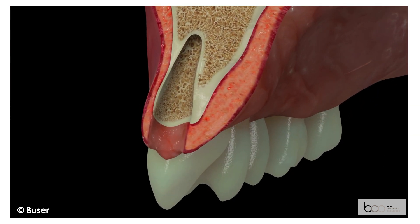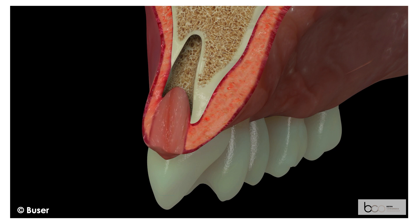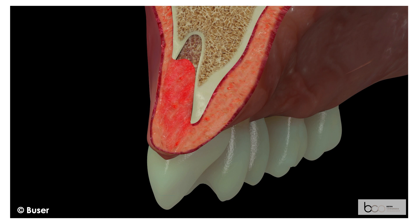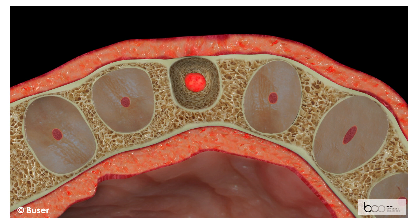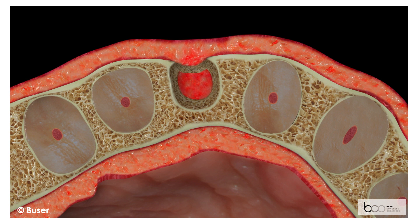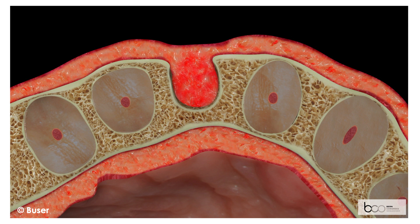The sagittal view shows the facial bone resorption and the ingrowth of soft tissues into the alveolus, leading to a spontaneous thickening of the soft tissues. This is biologically driven and is a clear clinical advantage for the future implant surgery. The coronal view shows the resorption of the facial bone wall and the spontaneous soft tissue thickening. Simultaneously, a flattening of the soft tissue contour takes place in the middle of the socket.